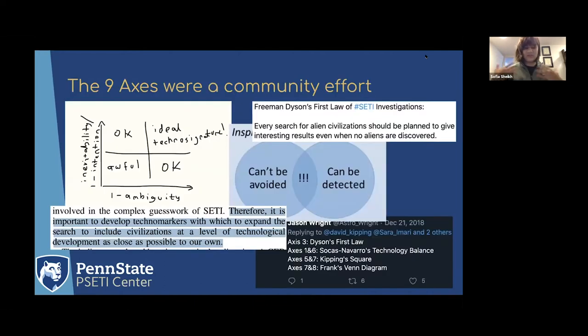To start out, I want to give credit where credit is due and say that the nine axes were entirely a community effort. The ideas that created this framework have been around in the literature a long time. There were many people I had conversations with at the Houston workshop who put things up on slides, and all of this contributed to the creation of the nine axes of merit.